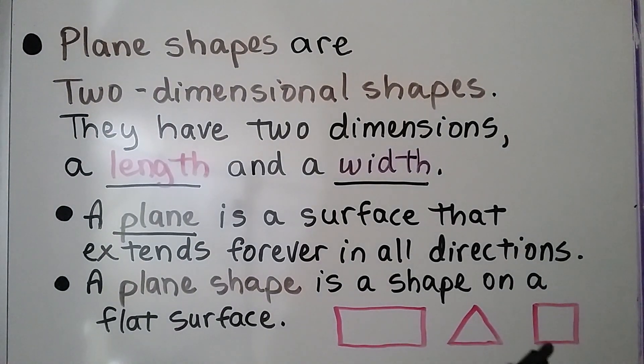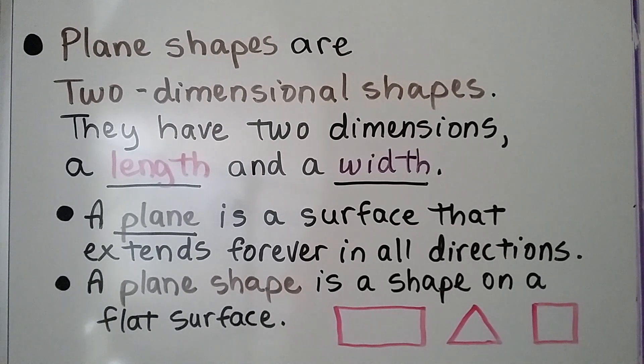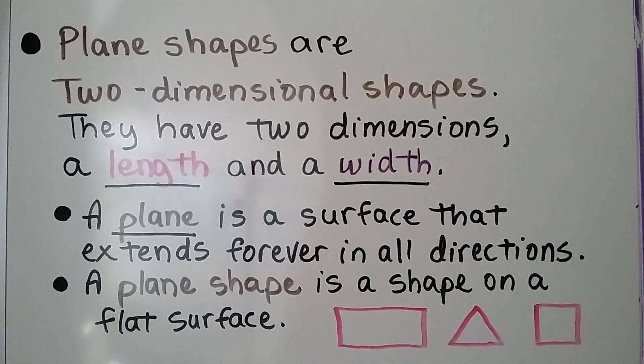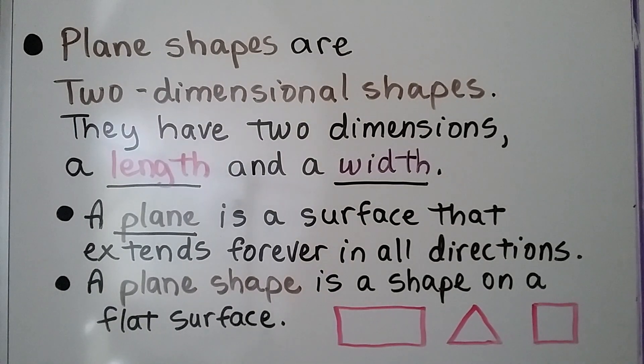This rectangle, triangle, and square — these are plane shapes. They're flat on my dry erase board. They each have a length and a width.